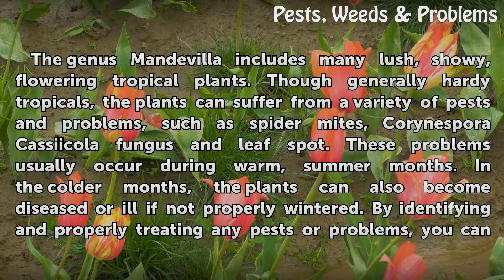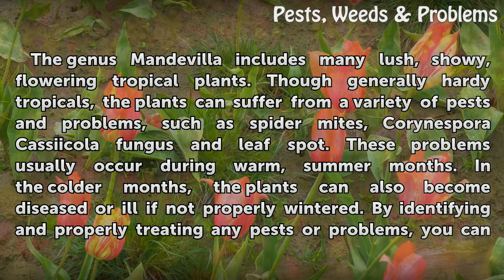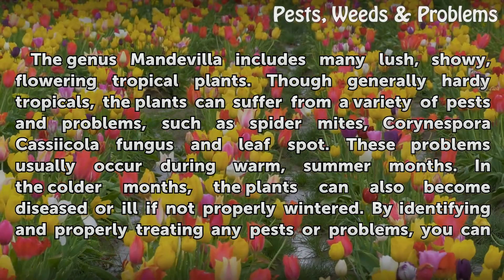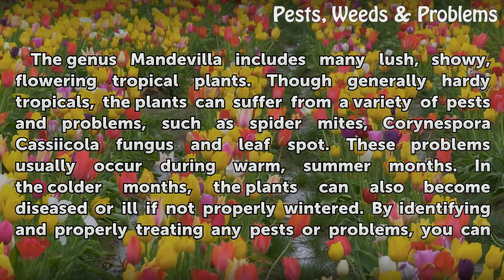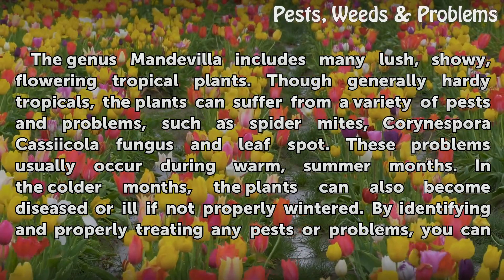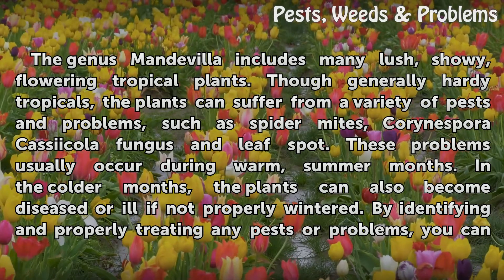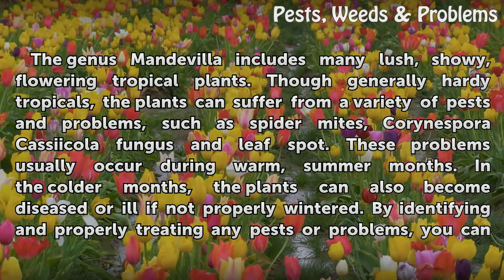Though generally hardy tropicals, the plants can suffer from a variety of pests and problems, such as spider mites, Corinsperic ashy coli fungus, and leaf spot. These problems usually occur during warm summer months. In the colder months, the plants can also become diseased or ill if not properly wintered.